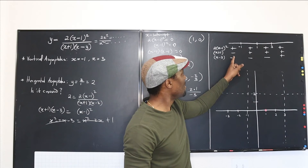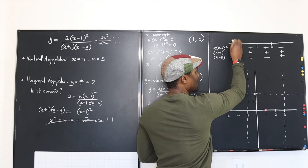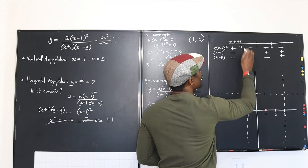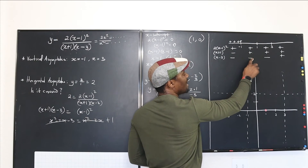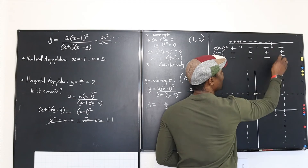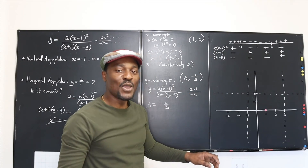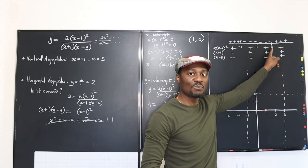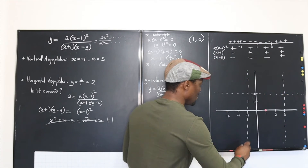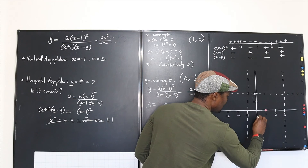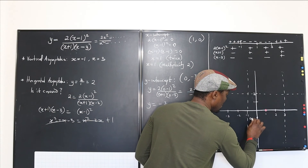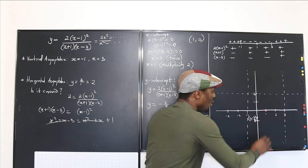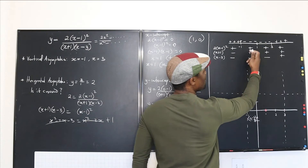Combining the signs: in the region before negative 1 — positive times negative times negative — the result is positive. From negative 1 to 3 — positive times positive times negative — the result is negative. Beyond 3 — positive times positive times positive — the result is positive. So the graph is above the x-axis before x equals negative 1, below the x-axis between negative 1 and 3, and above again beyond x equals 3. The y-intercept at (0, negative 2 over 3) confirms the negative region between the asymptotes.